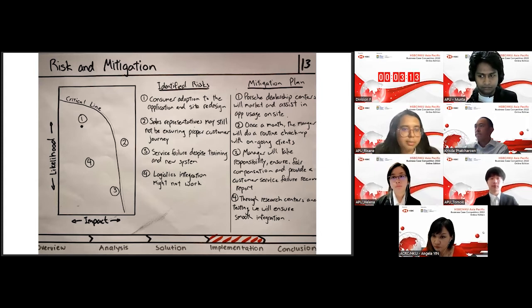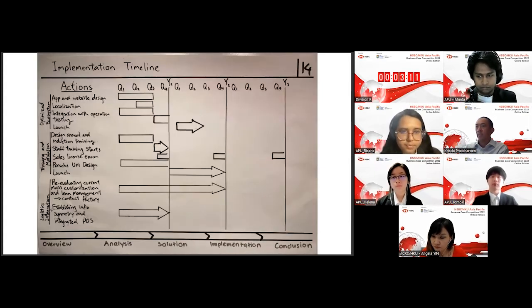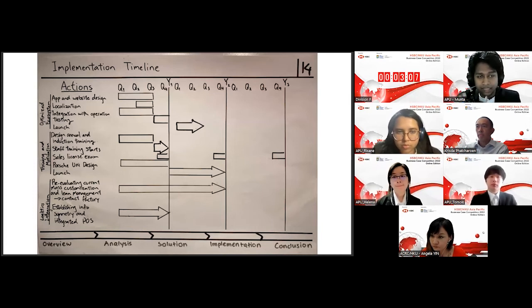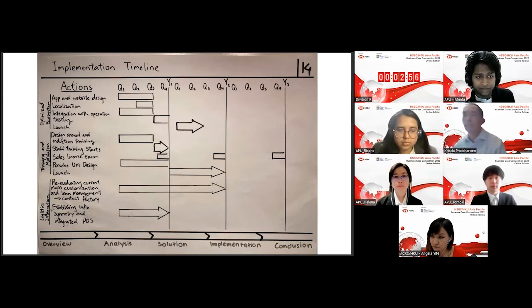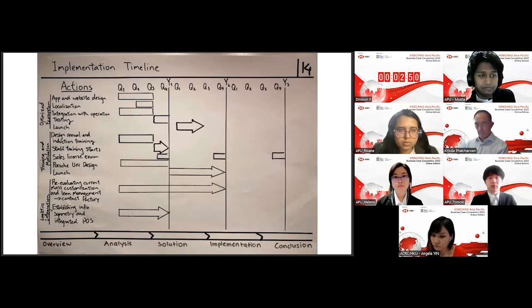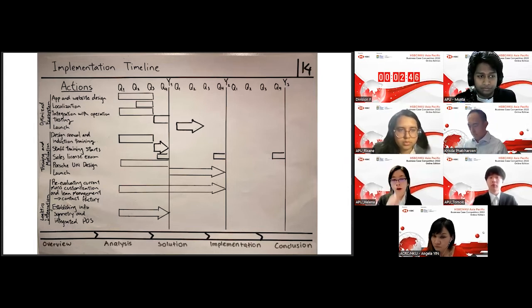Next, we will be moving on to the timeline. So, today in the timeline, we've taken a look at it from three different angles for the three different solutions. For the Optimize ecosystem, we'll be needing time to do the application and website redesign. We need to localize it because we're starting off and focusing on the Chinese market, and then we will need to integrate it with our operation, with our POS system, and then so on and so forth.